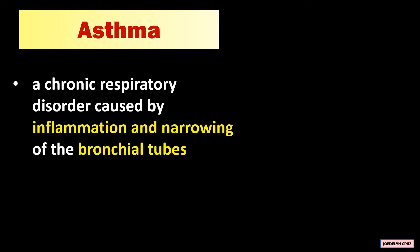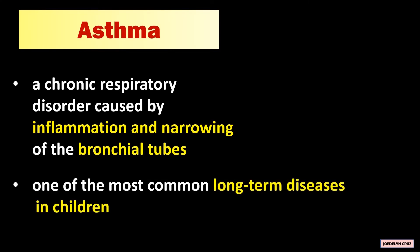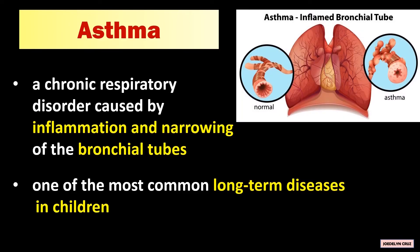Asthma is a chronic respiratory disorder caused by inflammation and narrowing of the bronchial tubes. It is one of the most common long-term diseases in children. In this picture, this is the normal bronchial tube that is not inflamed, while this is the bronchial tube with asthma — it is swollen and narrow.